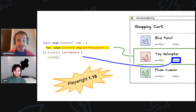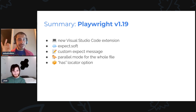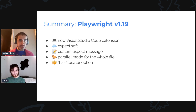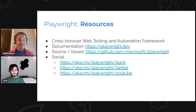This was the last feature for this release. Quick recap: new VS Code extension, soft assertions, custom expect messages, fully parallel mode you can opt in for your files, and the has locator option. Thank you for watching. If you like what we do, we have a huge social presence — we are active on Slack, Twitter, and YouTube. If you want to help us, please give us a star.